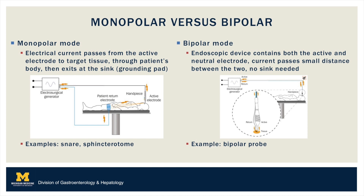Electrosurgical generators have both monopolar and bipolar modes. In monopolar mode, the electrical current uses the body as the medium through which the current passes, ultimately exiting from the grounding pad. Examples include hot snare or sphincterotomy. In bipolar mode, the endoscopic device contains both the active and neutral electrode, and therefore the grounding pad as a sink is not needed. An example of this is the bipolar probe.